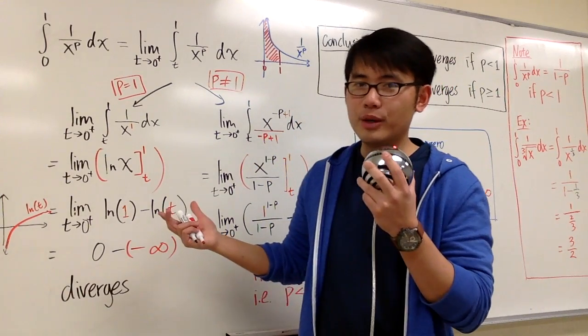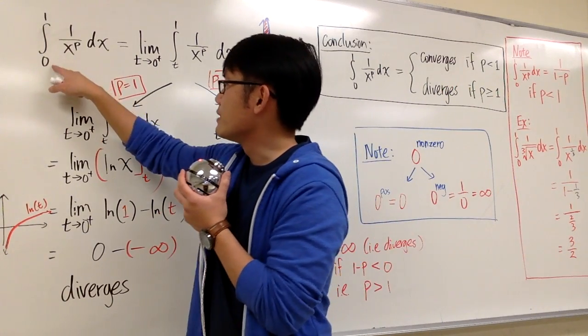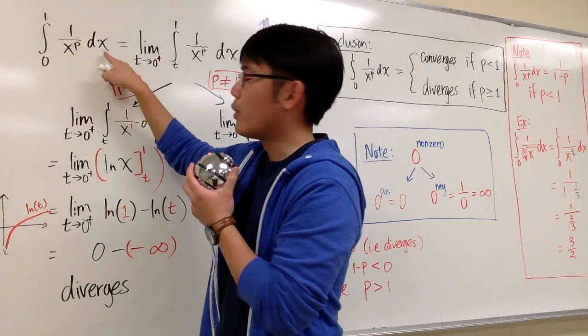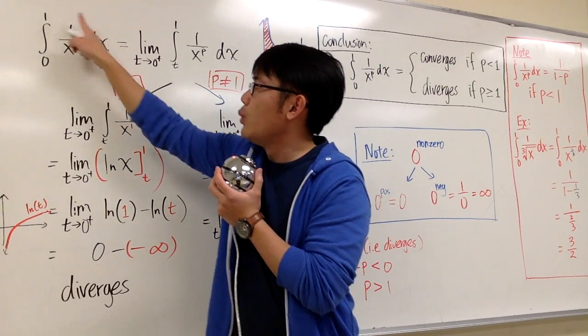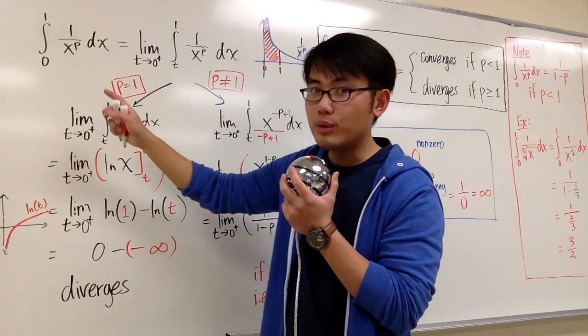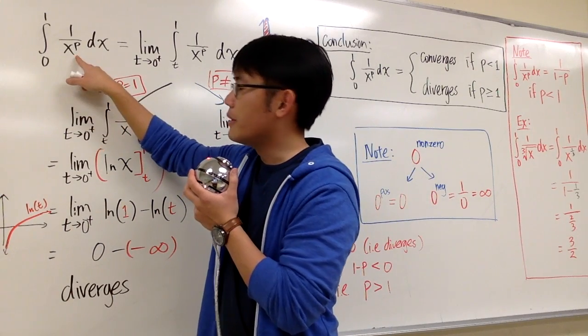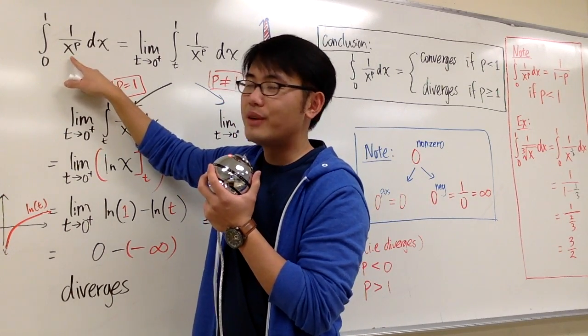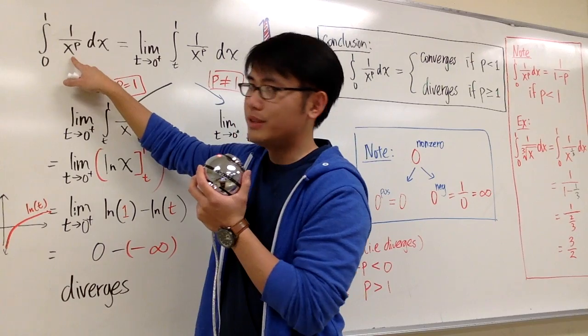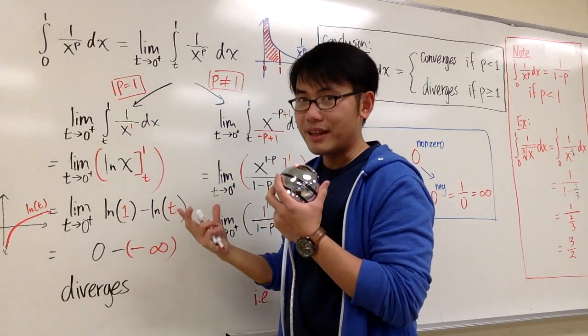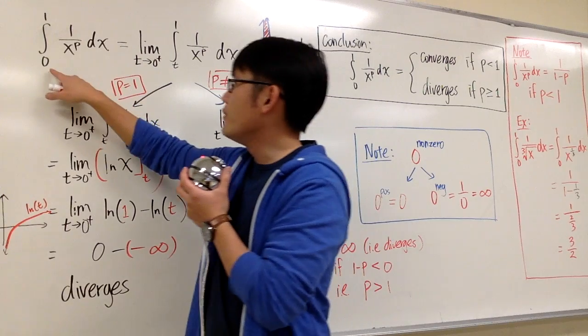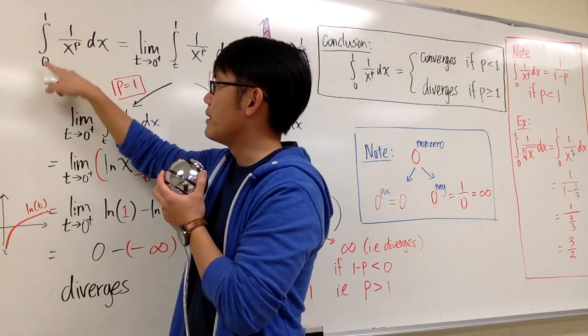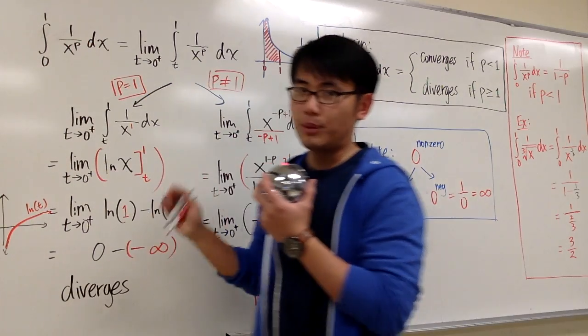Okay, this is like another p-integral kind of thing. This is the integral from 0 to 1, 1 over x to the p power dx. Our goal is to figure out for what value of p will this integral converge. Notice that this is the second type of improper integral because we have a vertical asymptote when x is equal to 0. We have done something similar to this in class, but the one we did in class went from 1 to infinity, but this is from 0 to 1. So be careful with this.